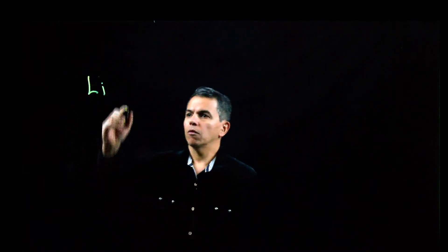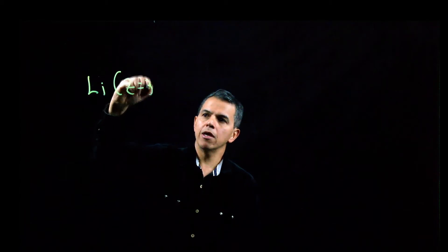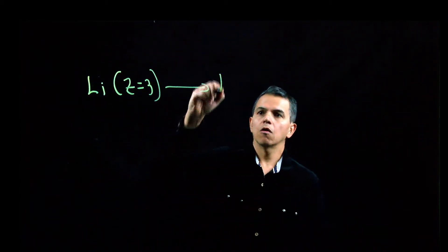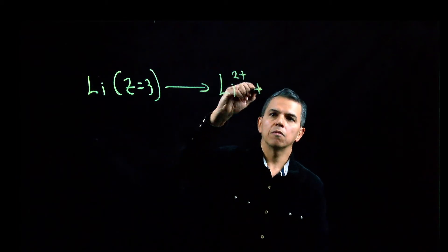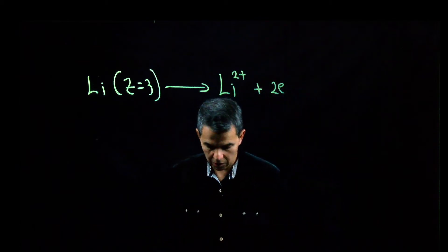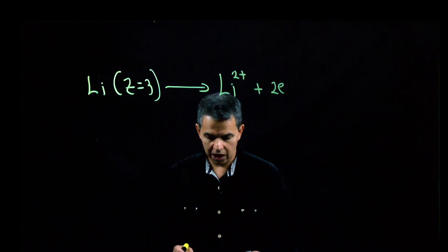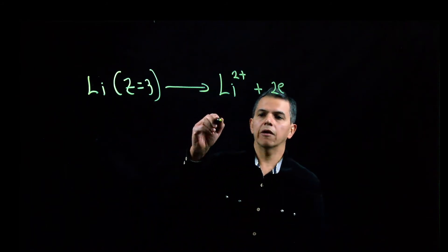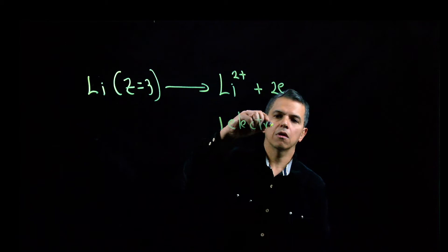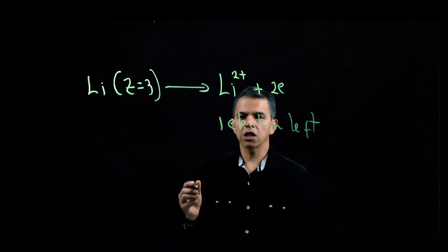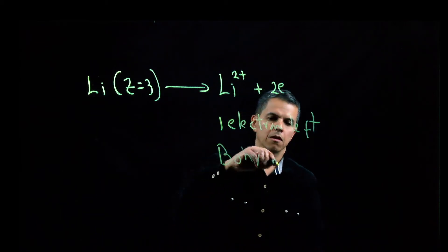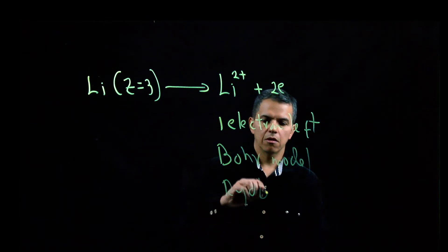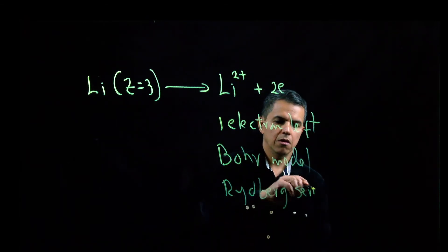To solve this problem, we first confirm that we have a one-electron system. Lithium has atomic number 3. If it loses two electrons, we are forming lithium 2 plus plus two electrons, leaving one electron remaining. So that means we have a one-electron system, and we can use the Bohr model and the Rydberg series to make our prediction.